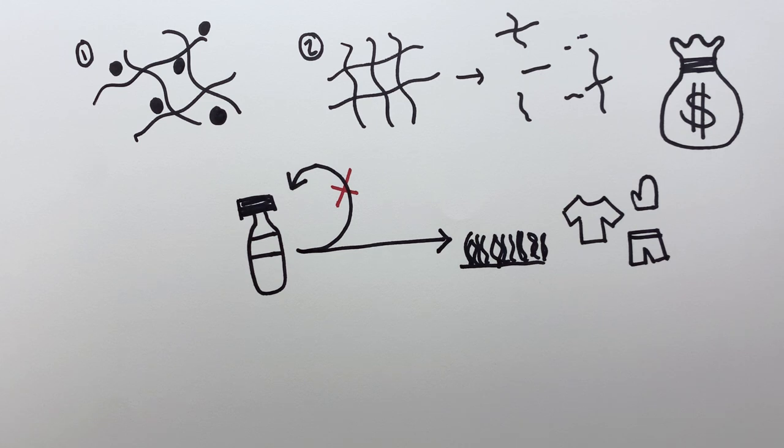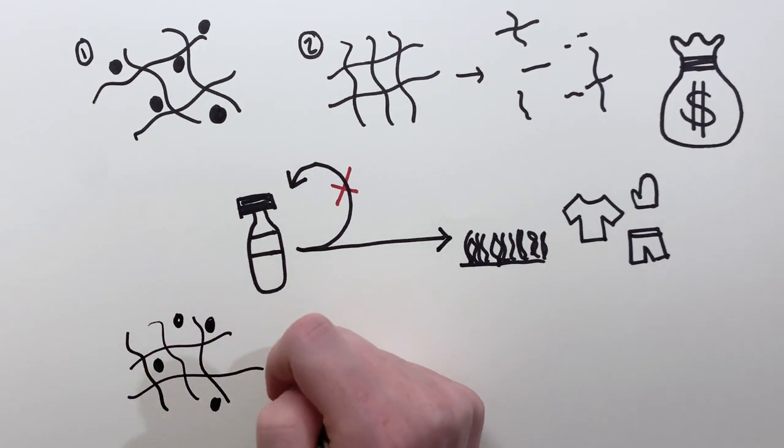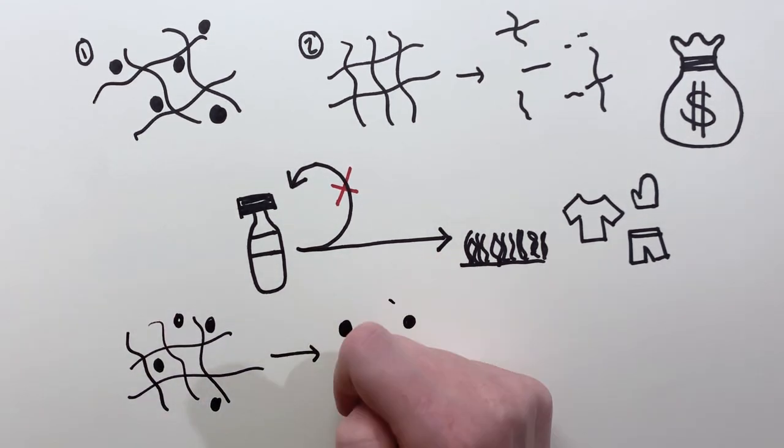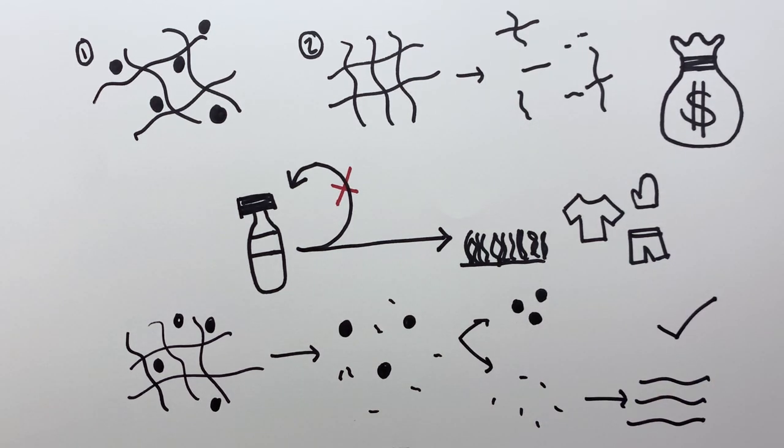Some researchers say that enzymatic recycling is a better way to recycle, because breaking plastics all the way down to the building blocks, purifying those, and then rebuilding the polymer means that recyclers have more control over the final product, making sure it's safe and strong.